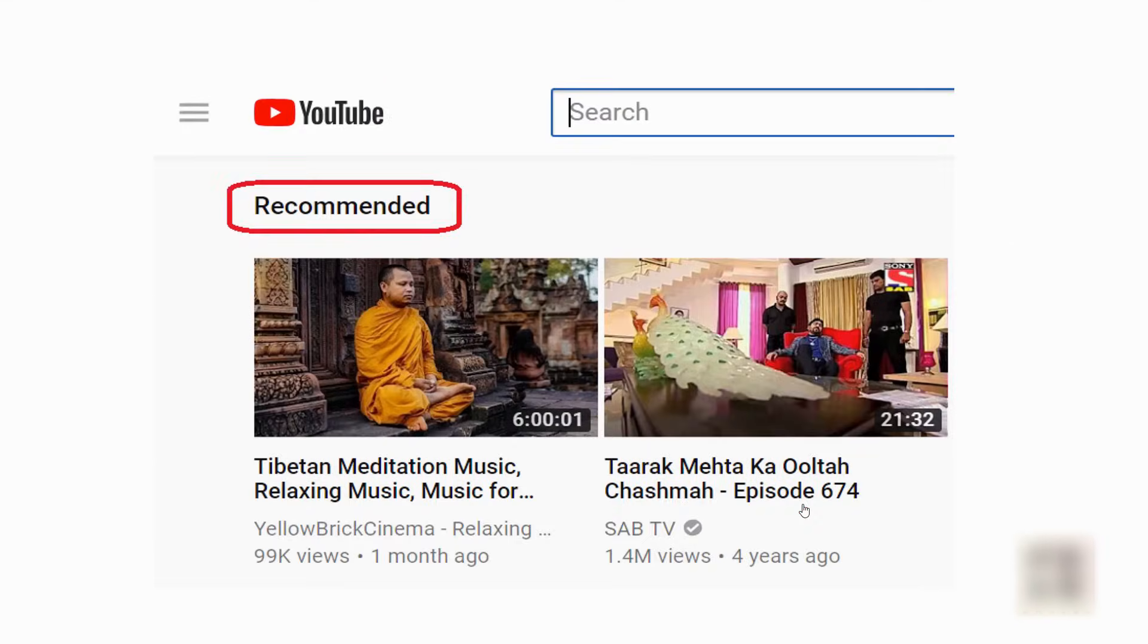YouTube's recommended video is another example of machine learning where they look at your past pattern on what kind of content you are watching and based on that they will generate the suggestions.